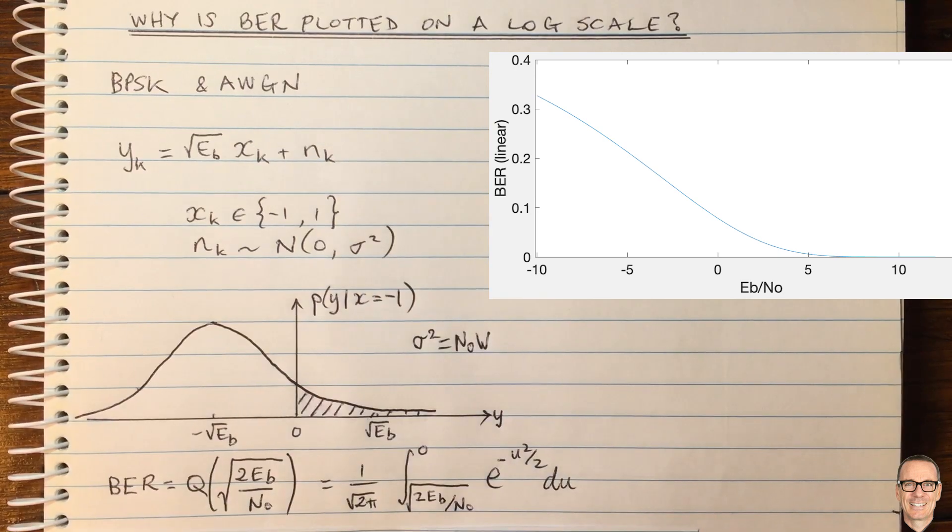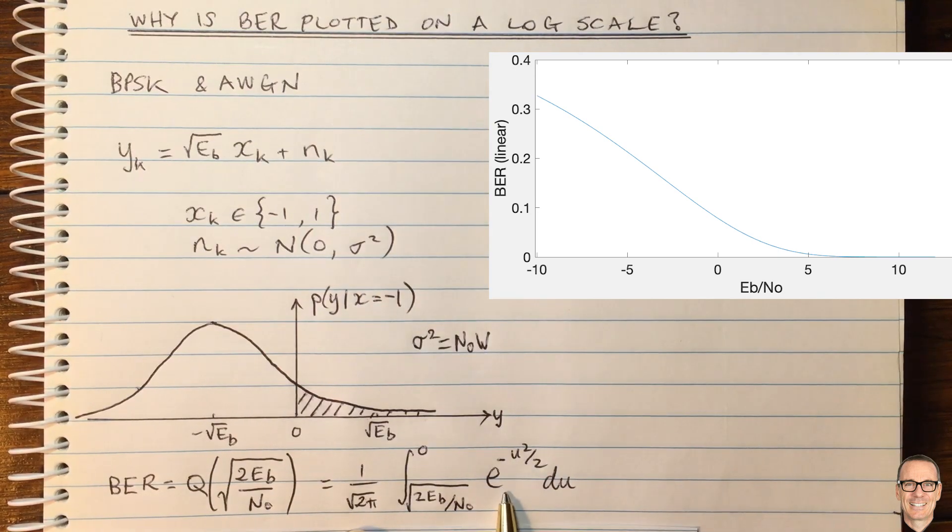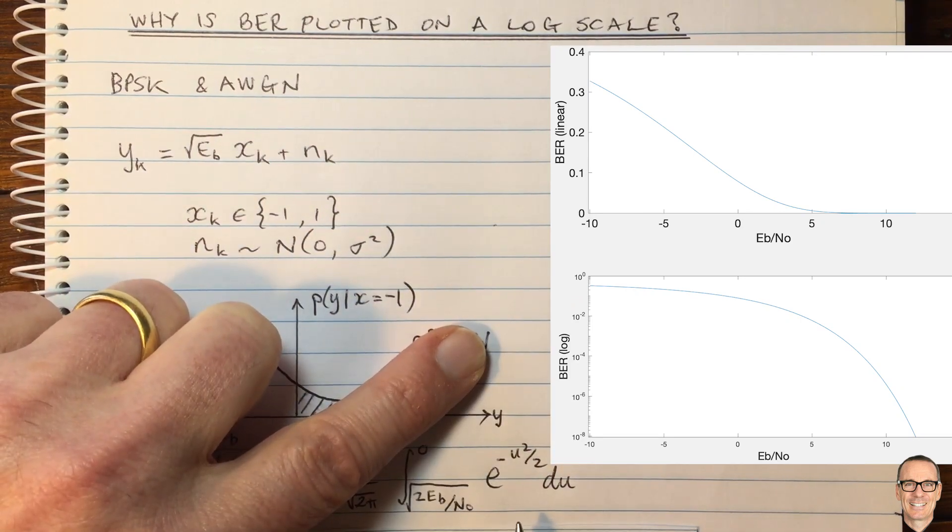So now let's think, well, this is a function with an exponential in it, so it might seem natural to plot it on a log scale because of the exponential here. And here's what you get if you do plot it on a log scale.